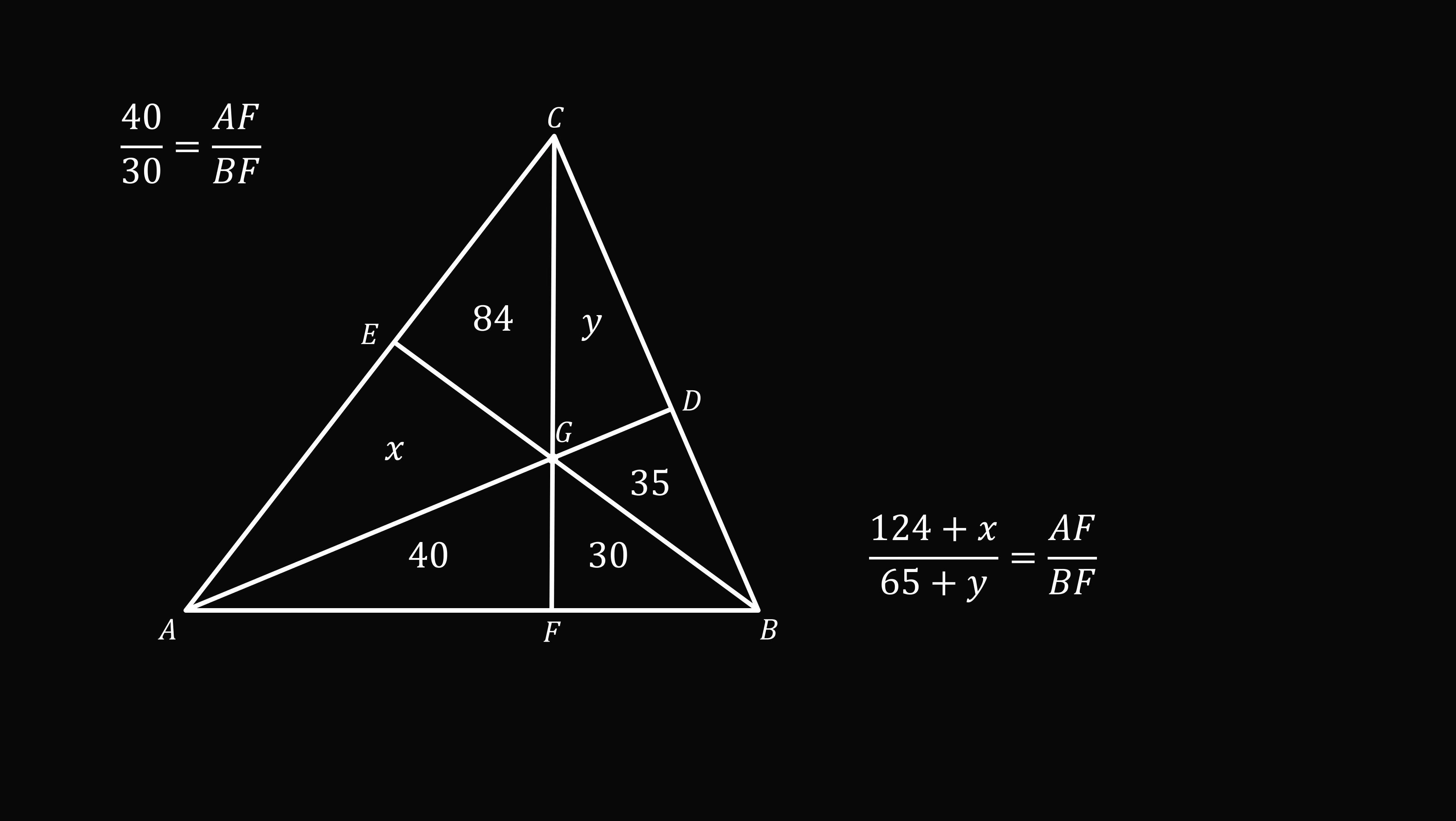So now let's take a look at these equations. We have two equations that are both equal to AF over BF. Therefore, they're equal to each other. So 124 plus x divided by 65 plus y equals 40 over 30.